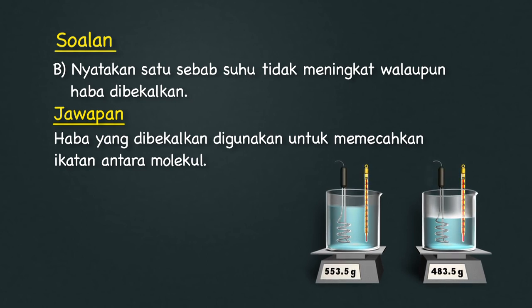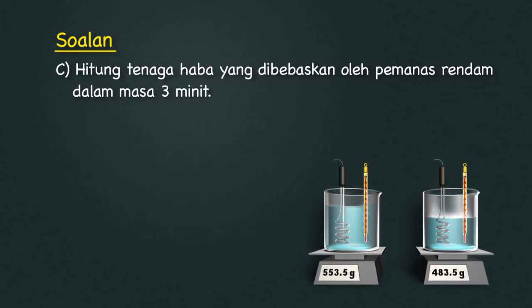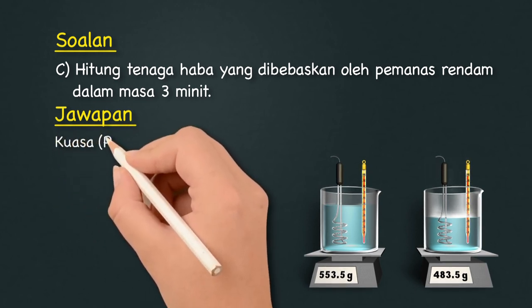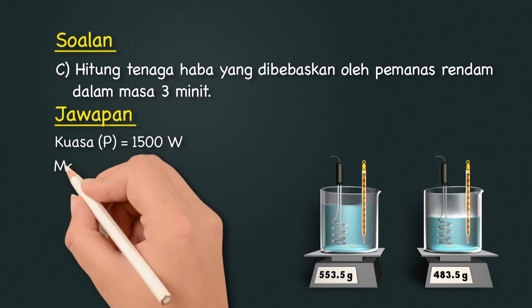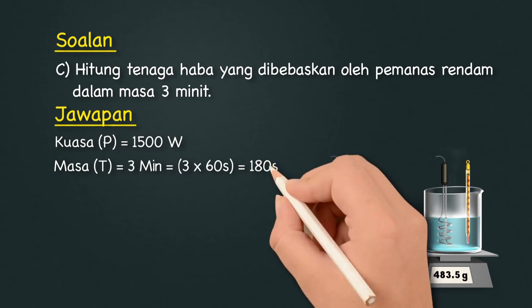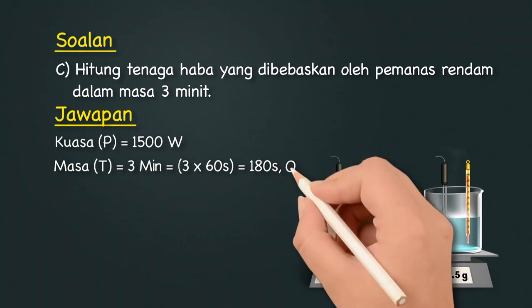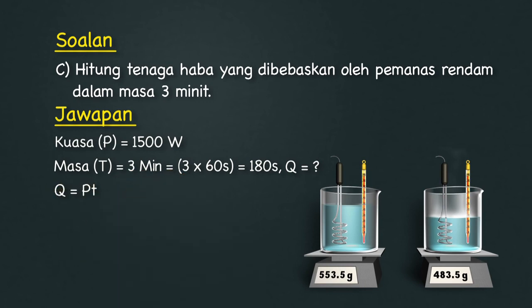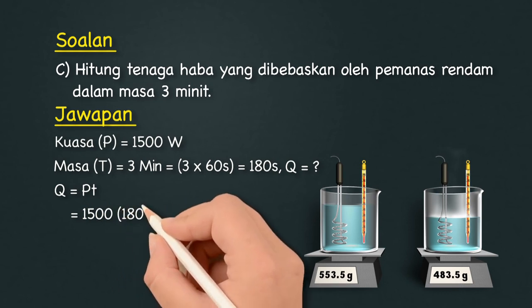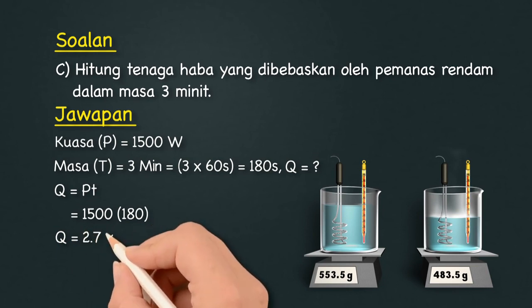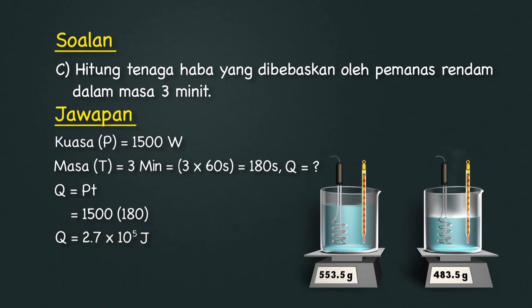Bahagian B: Nyatakan satu sebab suhu tidak meningkat walaupun haba dibekalkan. Jawapan: Haba yang dibekalkan digunakan untuk memecahkan ikatan antara molekul. Bahagian C: Hitung tenaga haba yang dibebaskan oleh pemanas rendam dalam masa 3 minit. Kuasa P = 1,500 W, masa T = 3 minit = 180 saat, maka Q = P × T = 1,500 × 180 = 2.7 × 10⁵ joules.